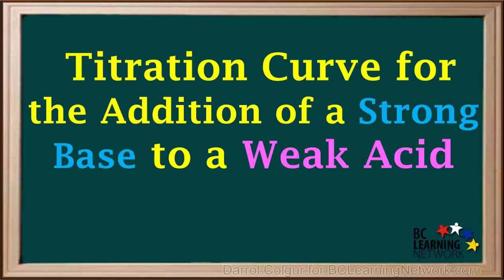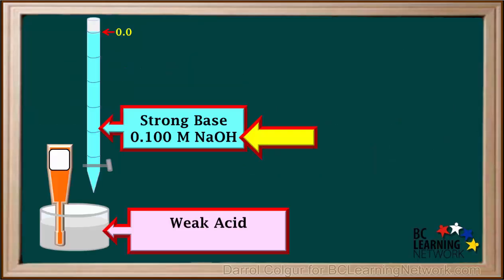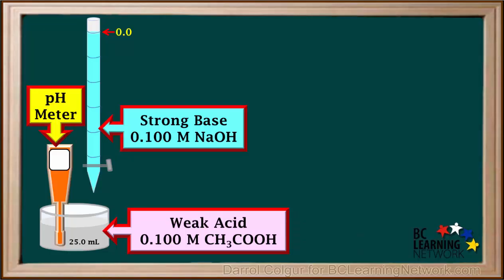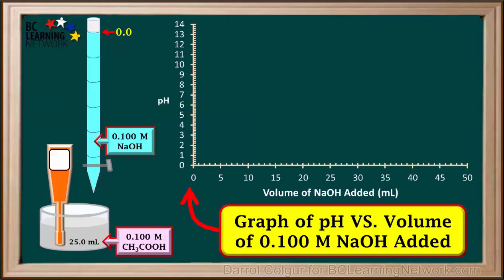Here we'll consider the addition of a strong base to a solution which is initially a weak acid. The strong base we'll use in our example is 0.1 molar NaOH, and the weak acid we'll use is 0.1 molar CH3COOH. We have initially added 25 mL of 0.1 molar CH3COOH to the beaker. A pH meter will be used to monitor the pH of the mixture in the beaker below the burette. We'll draw a graph of the pH in the beaker versus the volume of NaOH added to the CH3COOH in the beaker.